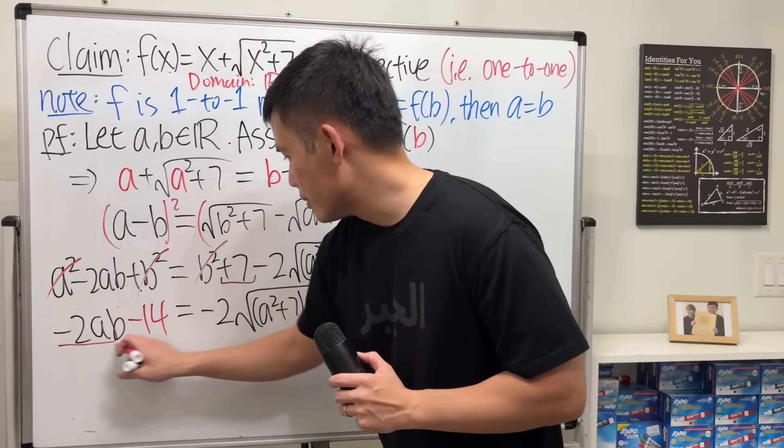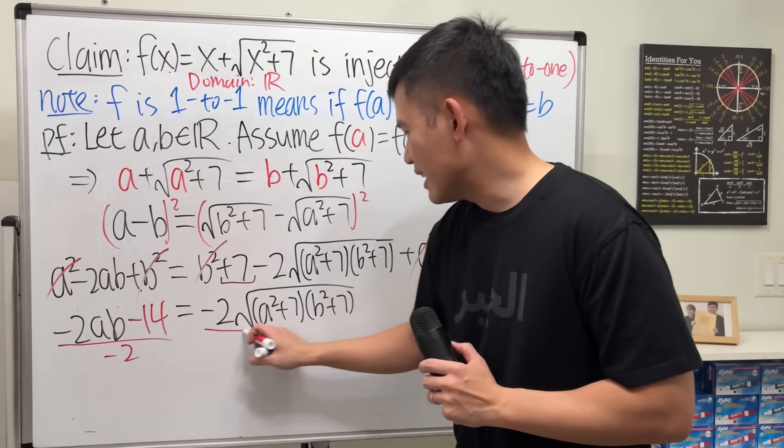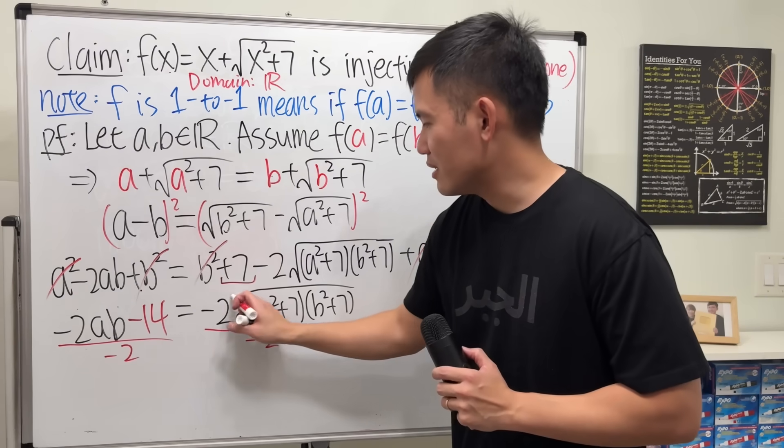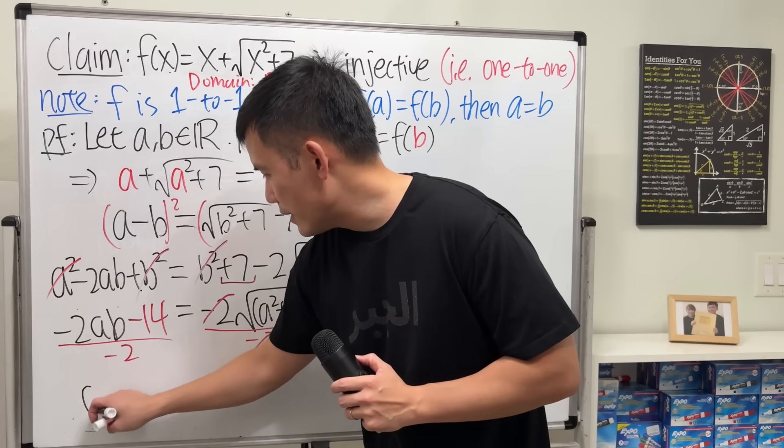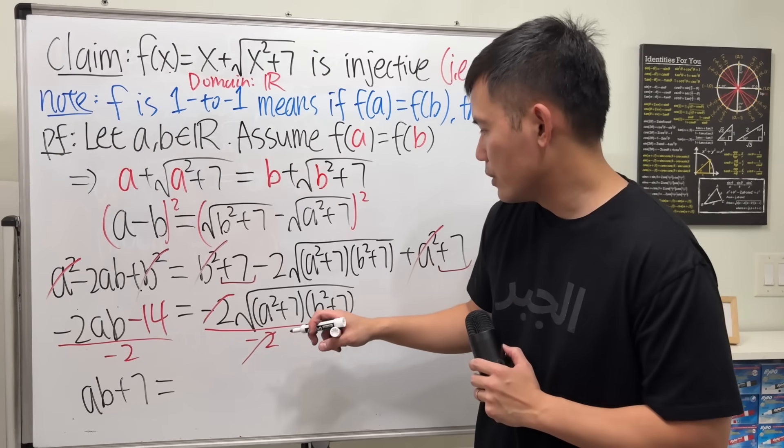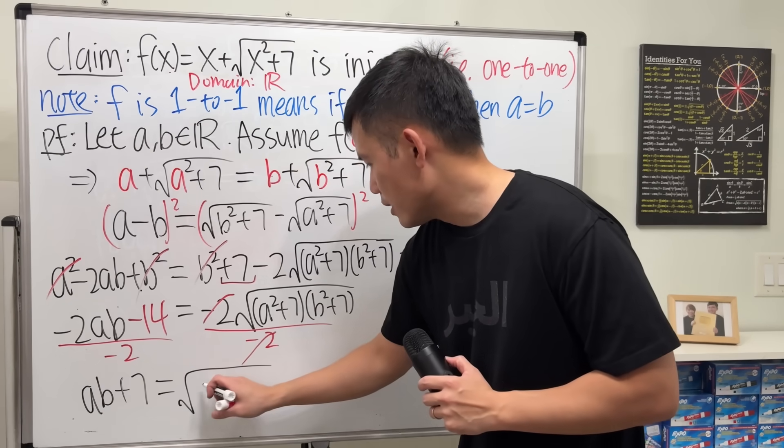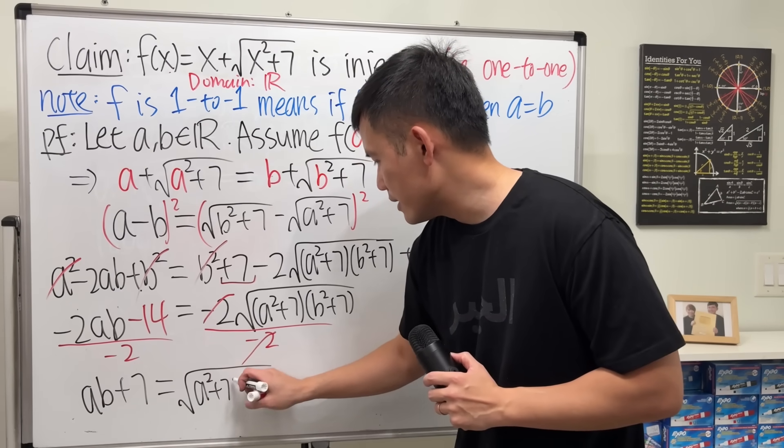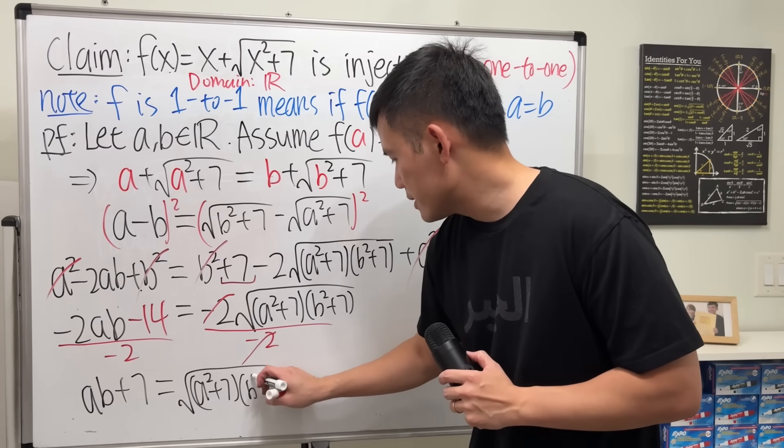And I'm just going to divide both sides by negative 2. So I will divide it by negative 2. Reduce that, we get positive ab. Reduce that, we get plus 7. That is equal to square root of a squared plus 7, and then b squared plus 7.